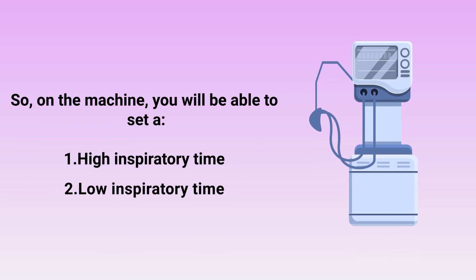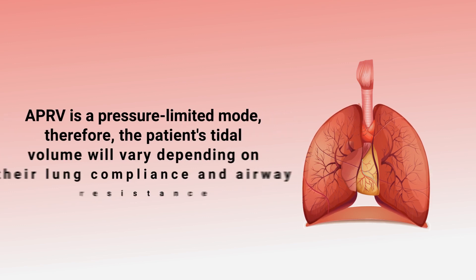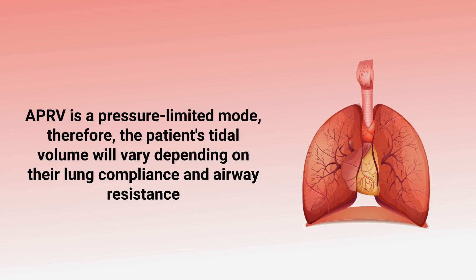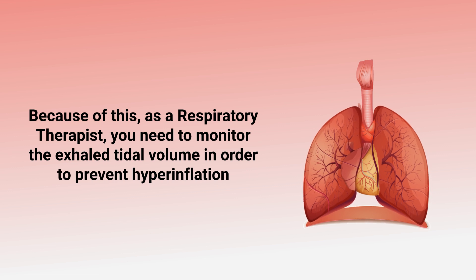Each mandatory breath is time-cycled by a preset inspiratory time. On the machine, you will be able to set a high inspiratory time and a low inspiratory time. So the four functional components of this mode that must be set are: two levels of pressure and a high and low inspiratory time. APRV is a pressure-limited mode, therefore the patient's tidal volume will vary depending on their lung compliance and airway resistance.